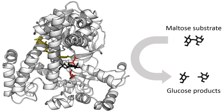In multicellular eukaryotes, cells in different organs and tissues have different patterns of gene expression and therefore have different sets of enzymes available for metabolic reactions. This provides a mechanism for regulating the overall metabolism of the organism. For example, hexokinase, the first enzyme in the glycolysis pathway, has a specialized form called glucokinase expressed in the liver and pancreas that has a lower affinity for glucose yet is more sensitive to glucose concentration. This enzyme is involved in sensing blood sugar and regulating insulin production.